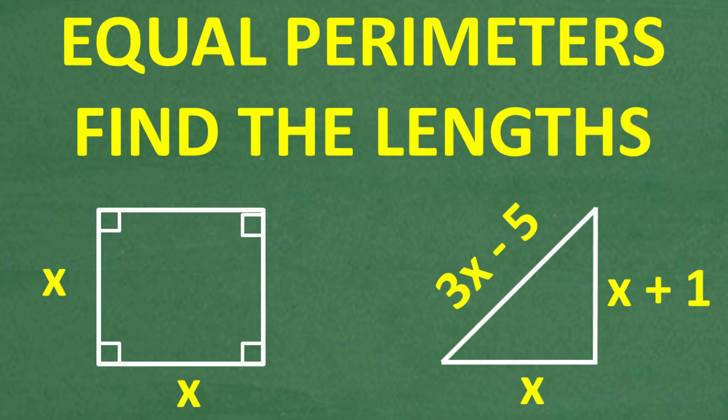This problem involves a square and a triangle, and the question is we want to find the actual lengths of the square and triangle. The only clue that we have is that the perimeters of each of these figures are equal. If we take a look at the dimensions of the square, the sides of the square are x, and the sides of the triangle are x, and then this one right here is x plus 1, and then this longest side here is 3x minus 5.